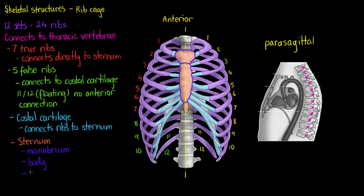The last small portion at the bottom is our xiphoid process. The xiphoid process is cartilage in early life, and later in life it will ossify and turn into bone like the rest of our sternum.